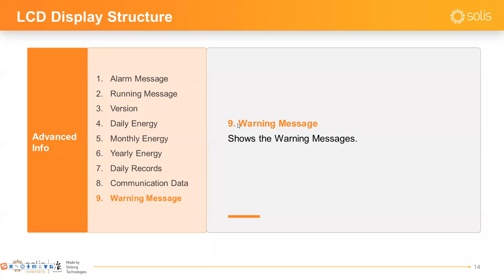The difference between Alarm Message and Warning Message: Alarm Messages affect normal generation and will stop the inverter. Warning Messages only give a notification — for example, high temperature or a surge event — and do not affect normal generation.